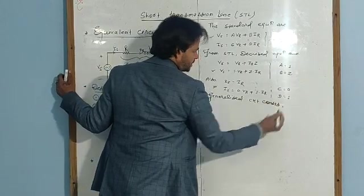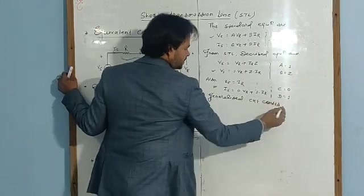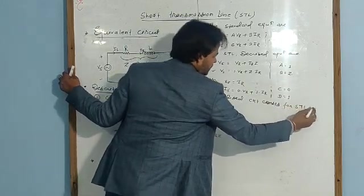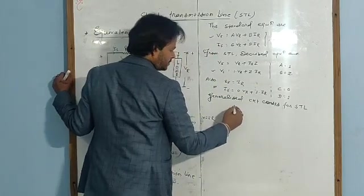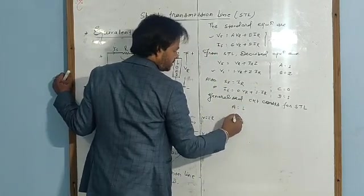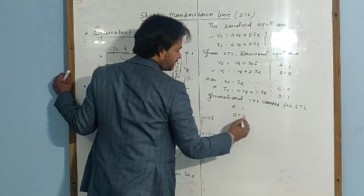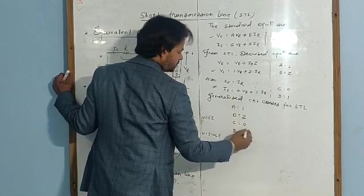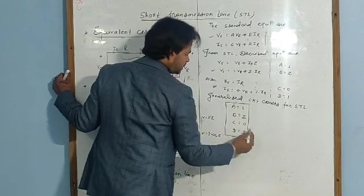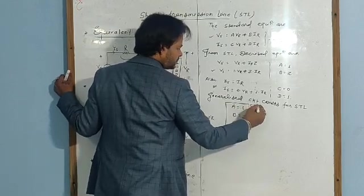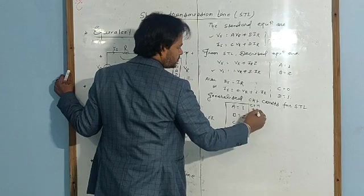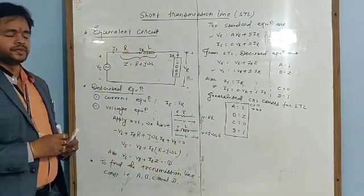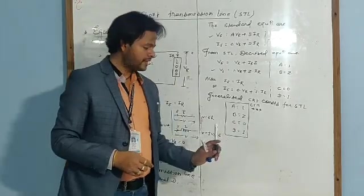The generalized circuit constants for the short transmission line are: A equals 1, B equals Z, C equals 0, D equals 1. This is really important — commit to memory. C equals 0.